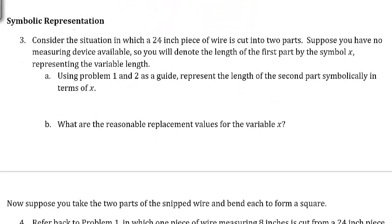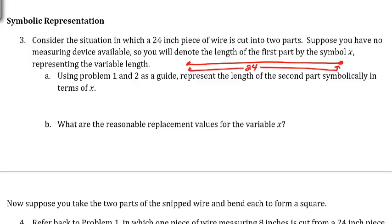Now we're going to look at the symbolic representation. Consider the situation in which a 24-inch piece of wire is cut in two parts. Suppose you have no measuring device available, so you will denote the length of the first part by the symbol X representing the variable length. So we have our wire that's 24 inches, and we're going to cut from that some length we don't know, so we use the letter X.